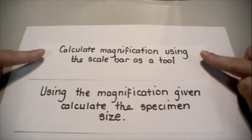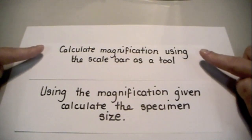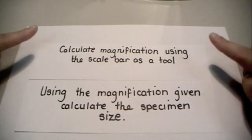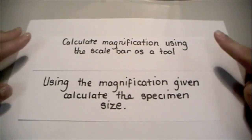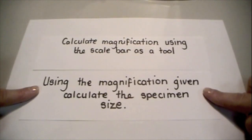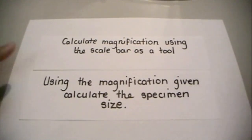First, we're going to calculate the magnification using the scale bar as a tool to do so. Once we have the magnification from this, then we can follow the same steps we just did, use the magnification to calculate the specimen size.